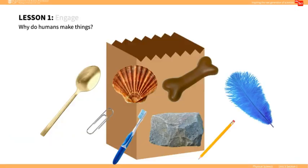In the Engage portion of the lesson, use the brown bag of items from the MySciKit. Go through the bag quickly to draw out one item at a time, asking students to identify each item.